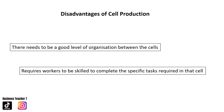Disadvantages of cell production: the process may become complex if there is not a good level of organisation between the cells. Cell production also requires workers to be skilled to complete the specific tasks required in each cell. Therefore, the business may have to invest in more training, which would increase costs.